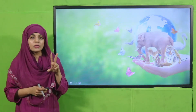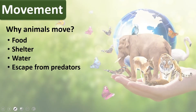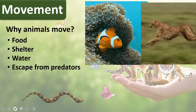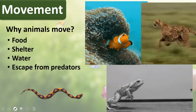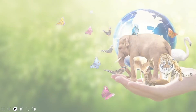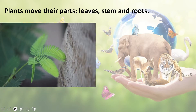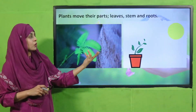Today we studied two characteristics of plants and animals. Animals move to find food, shelter, and water and to escape from predators — they swim, jump, run, hop, and some crawl or creep. Plants also move — their leaves, stem, and roots move. When you touch certain plants, they close their leaves. Plants also move their body parts toward sunlight. That is how plants show movement.